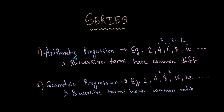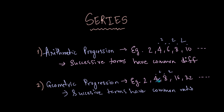In the last video, we looked at arithmetic progression and saw the formulas to calculate the nth term and to calculate the sum of a series. In this video, we will be looking at geometric progression. A geometric progression is a sequence of numbers wherein if you take any two successive numbers, they have a common ratio.